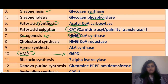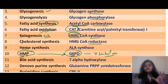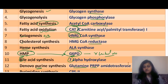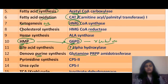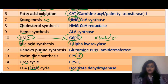HMP is like HM-Patch, and G6PD stands for Goons 6 — G6PD is X-linked recessive. Bile acid synthesis: 7-alpha-hydroxylase. De novo purine synthesis: glutamine PRPP amidotransferase. Pyrimidine synthesis: CPS2 (pyrimidine has 'di', meaning 2). Urea cycle: CPS1 (Eureka = urea, getting CPS). TCA or Krebs cycle: isocitrate dehydrogenase. So that covers all the rate limiting enzymes.